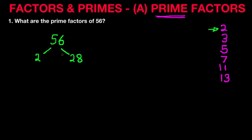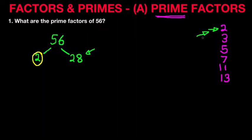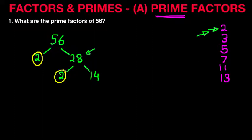We have got our first prime factor of the number 56. We are left with the number 28. Is 28 divisible by 2? Again we're starting with the smallest prime number. Well, 28 divided by 2 is 14. 2 times 14 equals 28. And we have now got our second prime factor of the number 56.